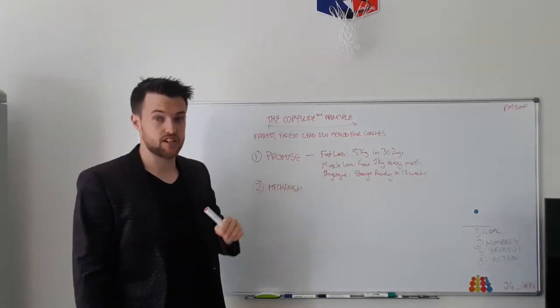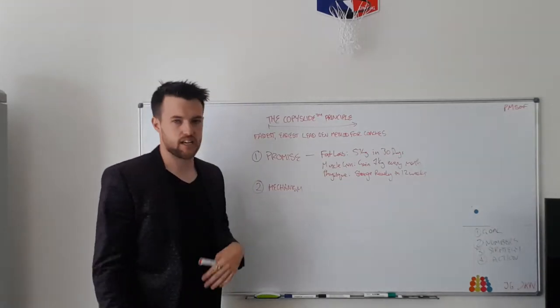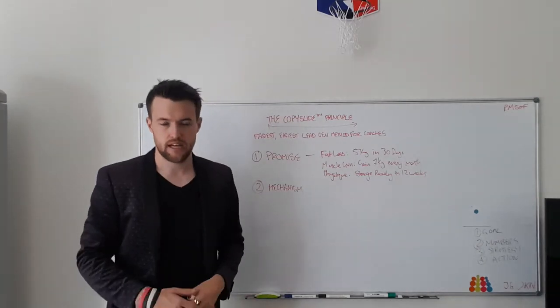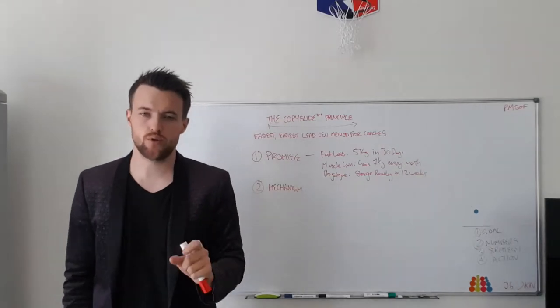So just going out there and making those claims is not making you any different. However, when you have a mechanism that's different to everyone else's process, you'll get results. So what I mean is, if you're a personal trainer, you might create a method called the ARB method. It's this formulaic, scientifically proven way that you get to lose a kilo a week, or 5 kilos in 30 days.